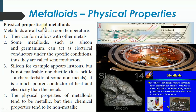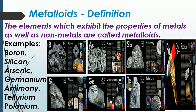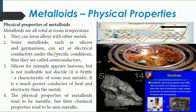Coming back to the properties: metalloids are solid at room temperature. We can also prepare alloys from metalloids by combining them with metals. For example, nickel combined with boron, arsenic, or tellurium forms alloys. Some metalloids such as silicon and germanium can act as electrical conductors under specific conditions — thus they are called semi-metals — and they can form alloys with other metals.